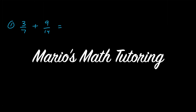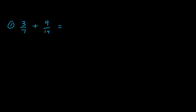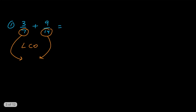The first problem we have an addition problem: three sevenths plus nine fourteenths. The key thing when you're adding or subtracting fractions is to get a common denominator. You look at the number in the bottom of the fraction and ask yourself what's the lowest common denominator — what's the smallest number that seven would divide into and fourteen would also divide into?